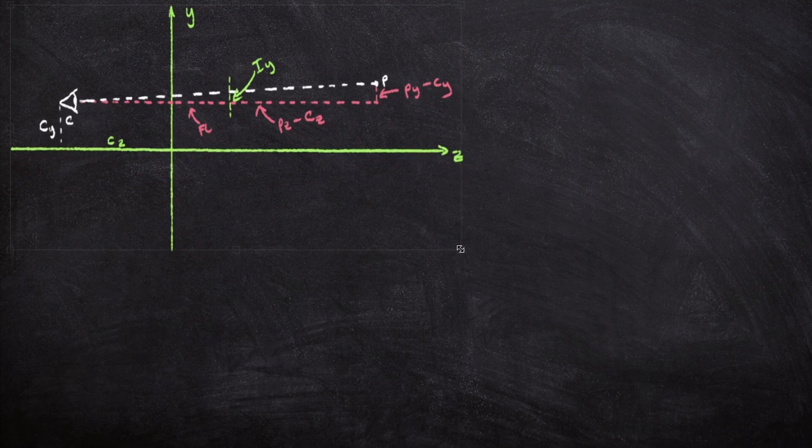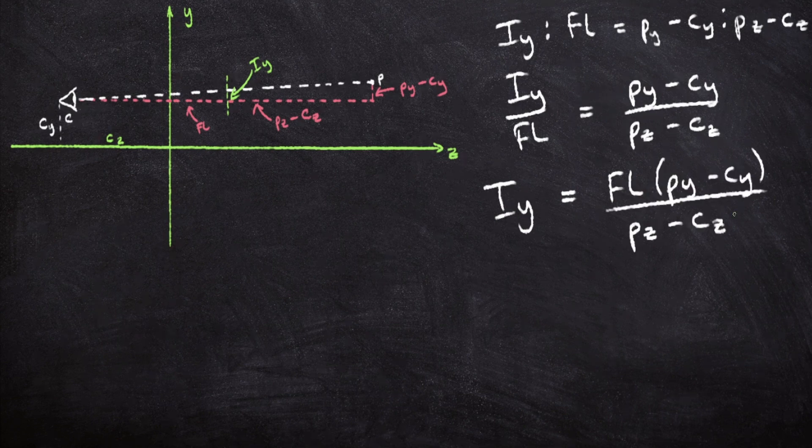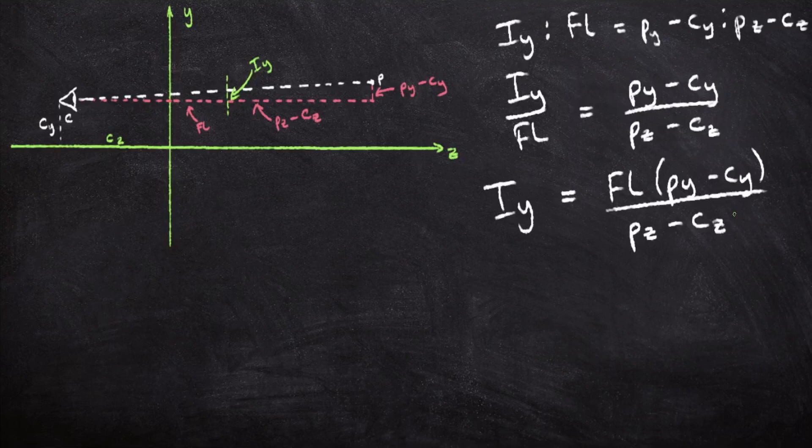So we can use this to write an equation using ratios, and then solve the ratios using a fraction, and then multiply by FL to get this: IY equals FL multiplied by PY minus CY over PZ minus CZ. And for IX, it's the same thing, only swapping the Ys for the Xs.